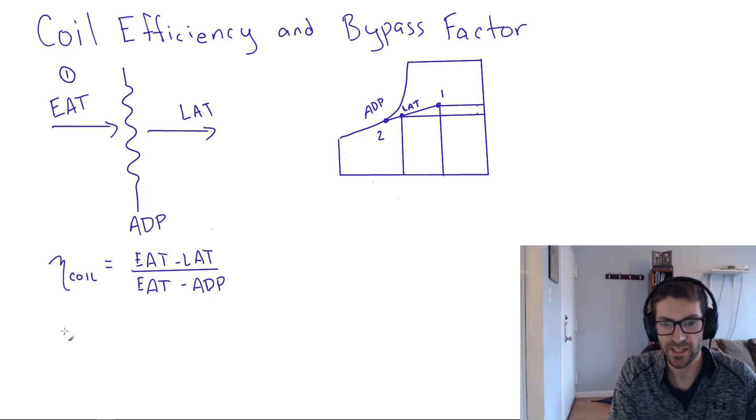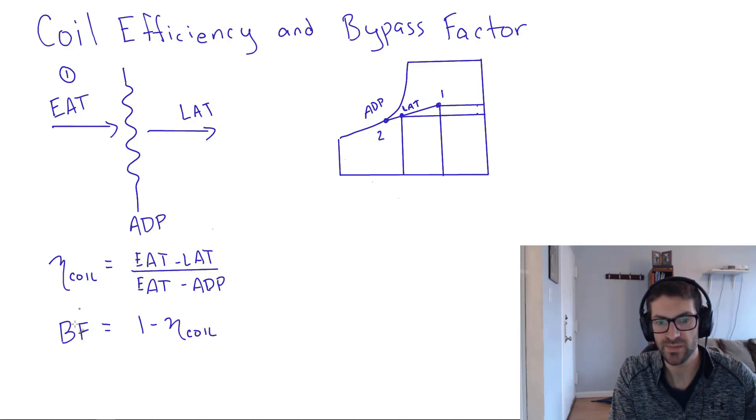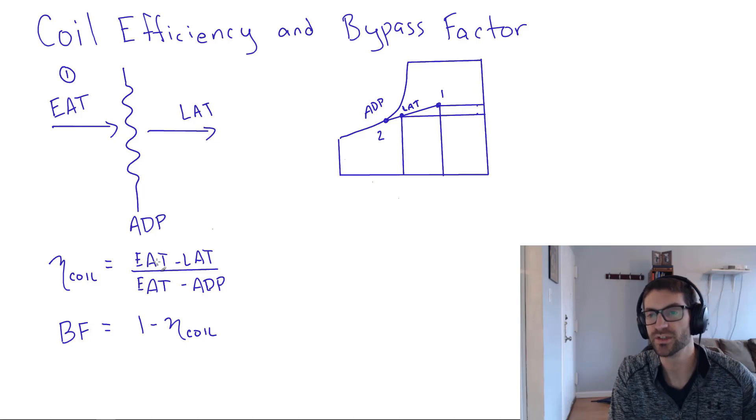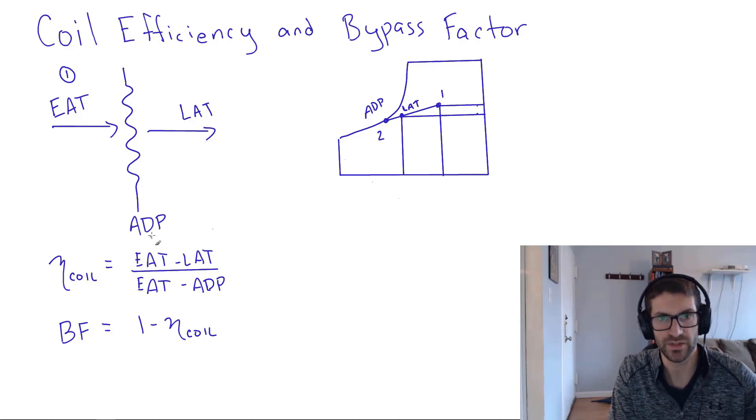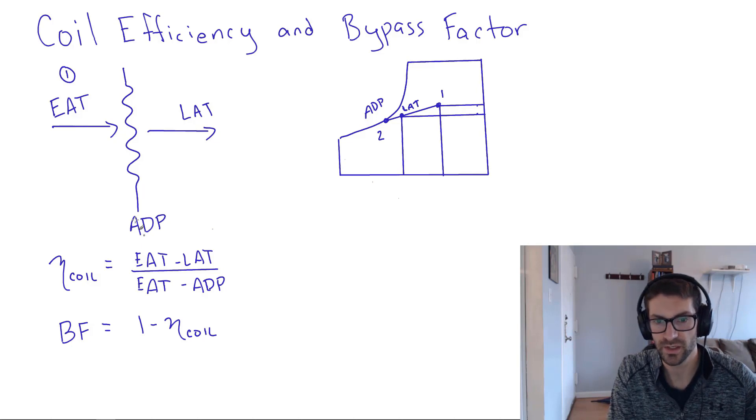The bypass factor is the complement of the coil efficiency. It's one minus the coil efficiency. So if a problem speaks to coil efficiency, you want to think about this ratio. If it speaks to bypass factor, it's the exact same concept. But we would say that if it's an 80% efficient coil, then it has a 20% bypass factor. That's the same information offered using different words.